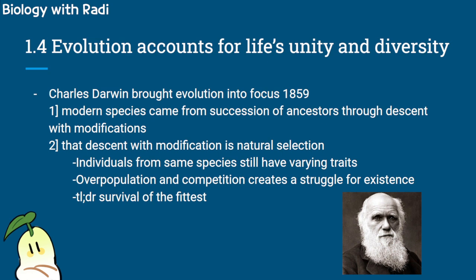The second point is that descent with modification happens through natural selection. Natural selection is essentially survival of the fittest. It assumes that individuals of the same species have varying traits and that there is competition between those individuals — most likely over resources — creating a struggle for existence. This environmental pressure creates conditions where individuals with favorable traits survive best.